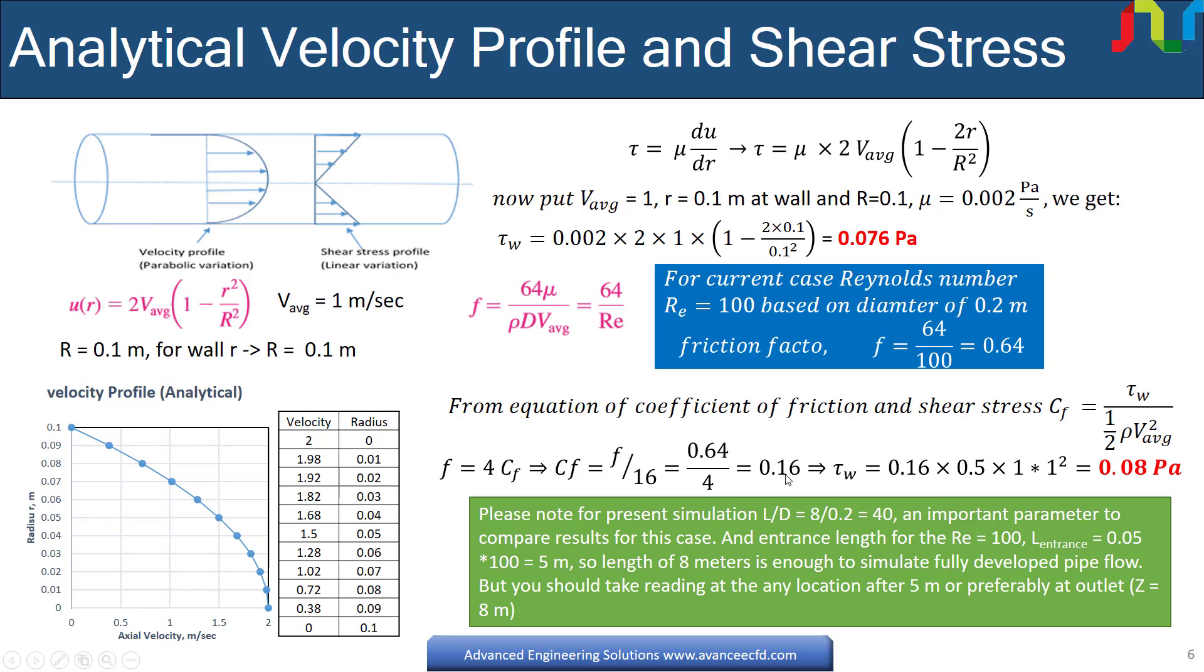Since the coefficient of friction is equal to one-fourth of friction factor, so we can find out the coefficient of friction is equal to 0.16. By using the definition of wall shear stress, which is equal to coefficient of friction multiplied by 0.5 multiplied by density and multiplied by square of average velocity, we get the wall shear stress equal to 0.08 pascal. So there is around 5% difference in both values which are both of analytical nature.